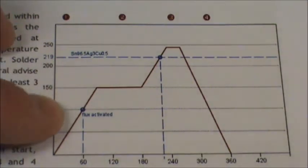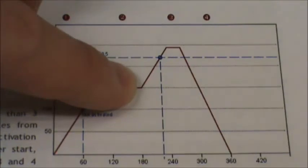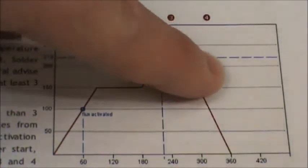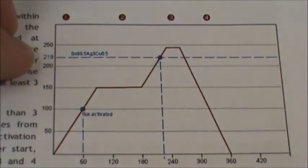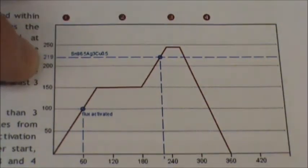At about the first minute, the flux gets activated at around 100 degrees C. Then we go through the soak zone and then when it ramps up to the reflow section of the profile, you can see the lead free solder is going to melt somewhere around 219.